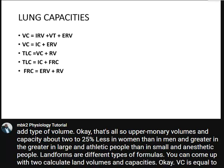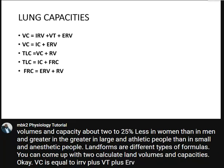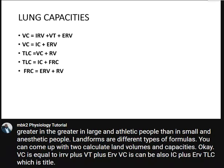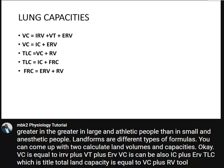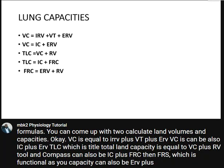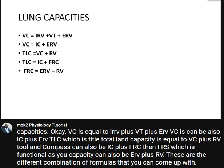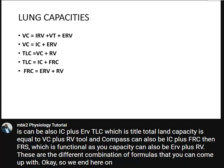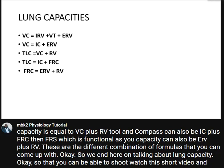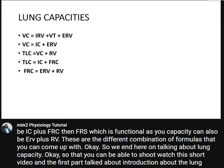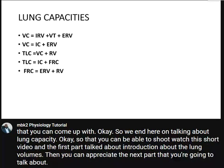Here are the formulas: VC equals IRV plus VT plus ERV; VC can also be IC plus ERV. TLC equals VC plus RV; TLC can also be IC plus FRC. FRC equals ERV plus RV. These are the different combinations of formulas you can use. This concludes our discussion on lung capacities. Watch the first part on lung volumes, and the next lecture will be the third part on lung capacities and volumes. Thank you very much for your time.